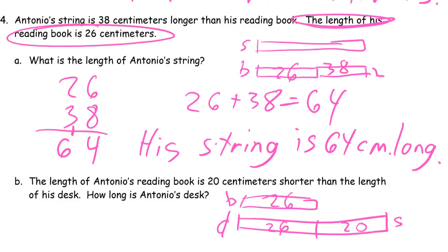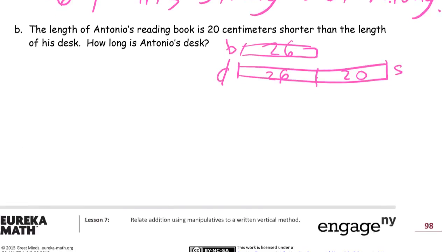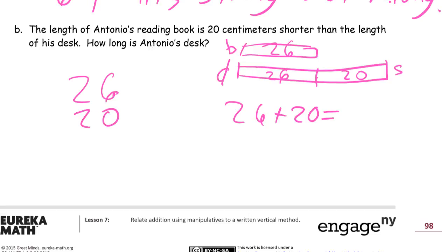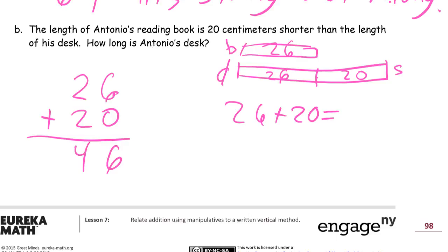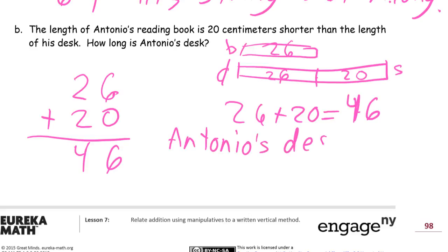The desk is twenty-six plus twenty. Using the vertical method: twenty-six plus twenty. Six plus zero — I don't even have to bundle any ones, it's just six. And that's four tens: forty-six. Antonio's desk is forty-six centimeters long.